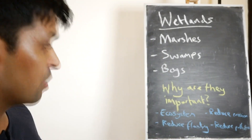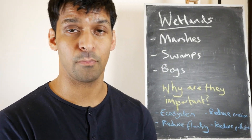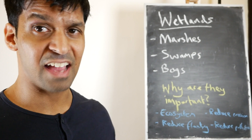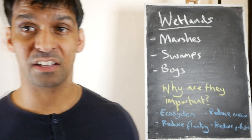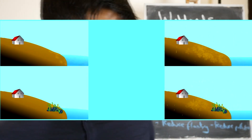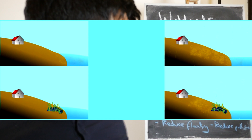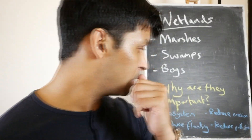So why are wetlands important? Well, for a number of reasons. First of all, they're an important ecosystem for all sorts of wildlife that you will not find in other places. They can reduce flooding because they can store a large amount of water. They can also reduce erosion, particularly coastal erosion, because the roots of the plants hold the soil together and the wetland acts as a physical barrier to help prevent the coast being worn away.